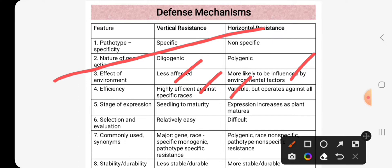Since it is governed by many genes, the stage of expression of this resistance is seedling to maturity, while the stage of expression of horizontal resistance is increased as plant matures. This works at maturity, but vertical resistance works from seedling to maturity stage.